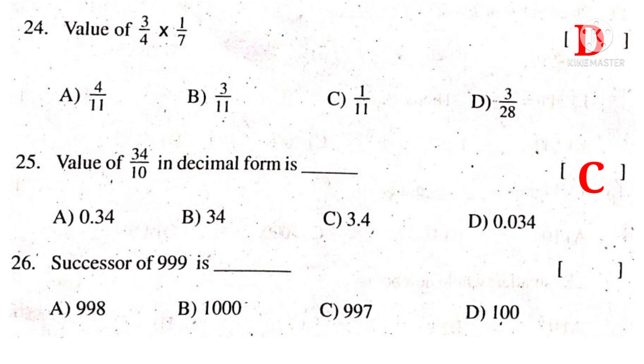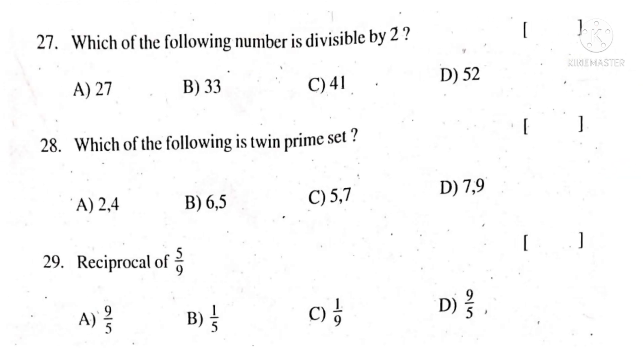Successor of 999 is - add 1 to 999. So 999 plus 1 gives 1000. The correct choice is B. 27th question: which of the following number is divisible by 2? A number is divisible by 2 when it has either 0 or 2 or 4 or 6 or 8 in its units place. Observe that 52 has 2 in its units place, so it is divisible by 2. The correct choice is D.